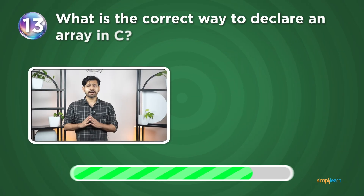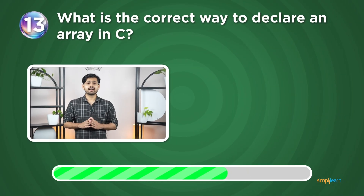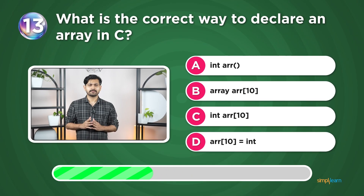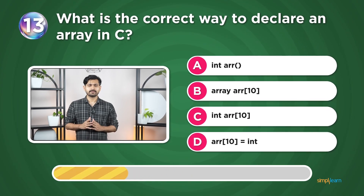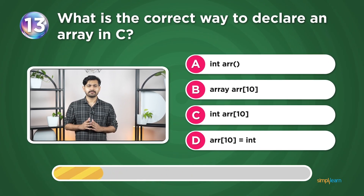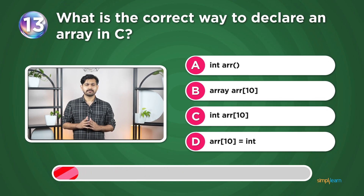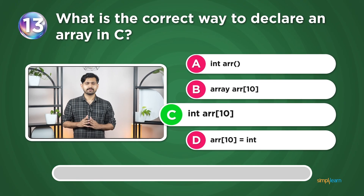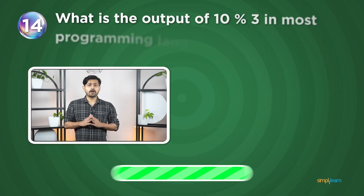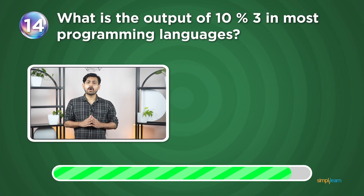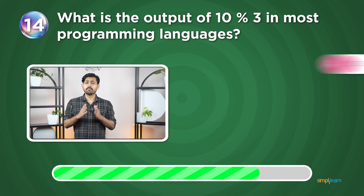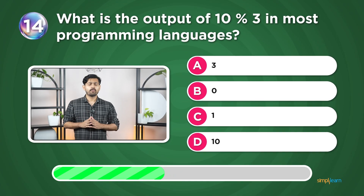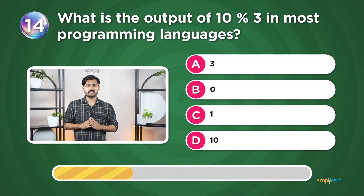Question 13: What is the correct way to declare an array in C? Question 14: What is the output of 10 modulo 3 in most programming languages? 3, 0, 1, or 10?